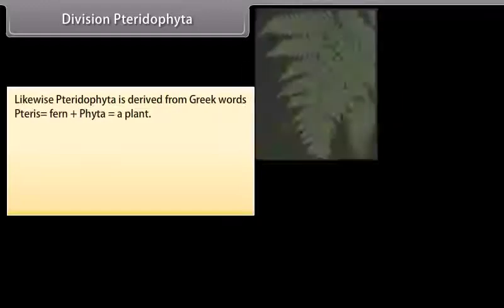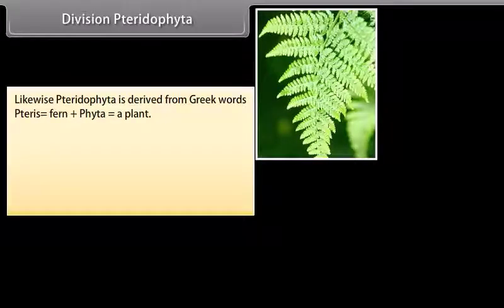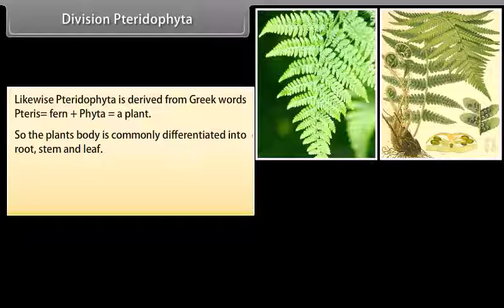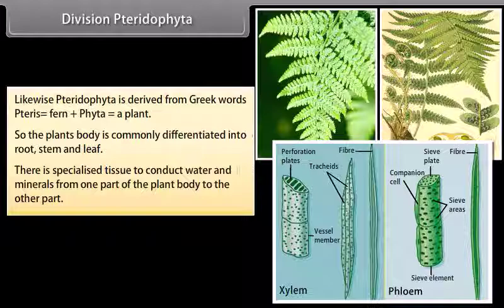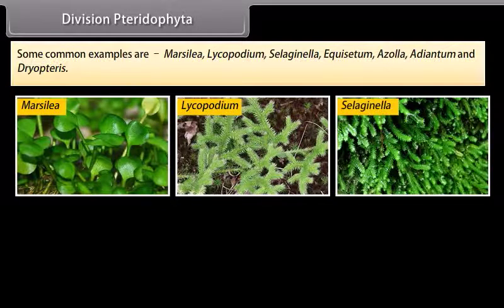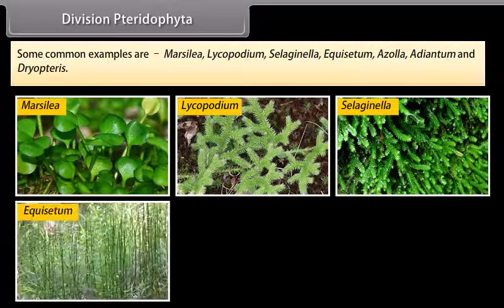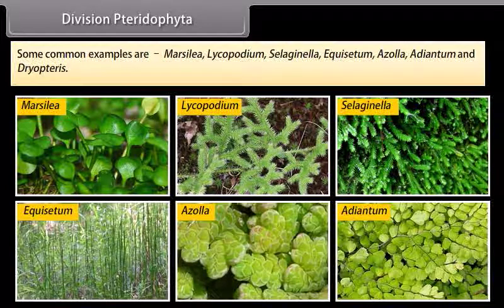Division Pteridophyta: Pteridophyta is derived from Greek words 'pteron' meaning fern, plus 'phyta' meaning a plant. The plant body is commonly differentiated into root, stem and leaf. There is specialized tissue to conduct water and minerals from one part of the plant body to the other. Some common examples are Marsilea, Lycopodium, Selaginella, Equisetum, Azolla, Adiantum, and Dryopteris.